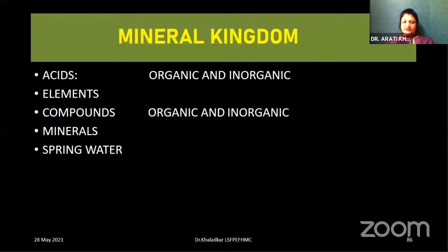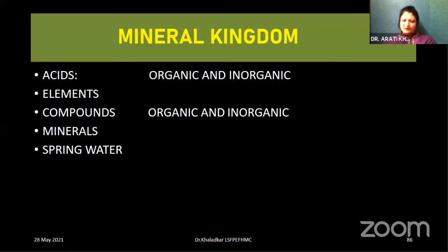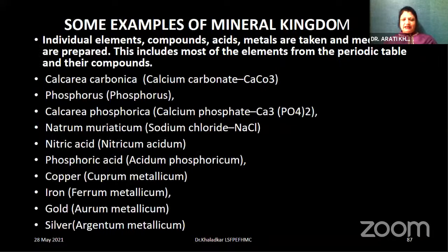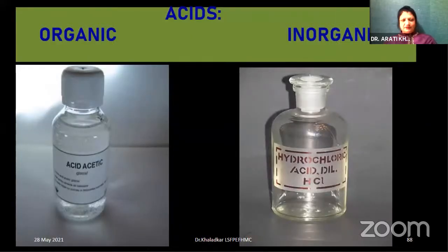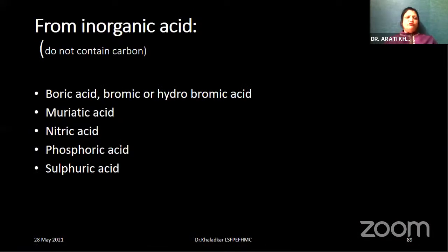Now we enter the very basic core of the earth — the mineral kingdom. The mineral kingdom includes acids, elements, compounds, minerals, and spring water. In acids, we have organic acids and inorganic acids. Organic acid example: acetic acid. Inorganic acid example: muriatic or hydrochloric acid. Inorganic acids do not contain carbon. Examples are boric acid, muriatic acid, nitric acid, phosphoric acid, and sulfuric acid.